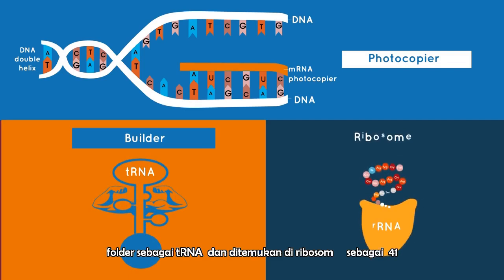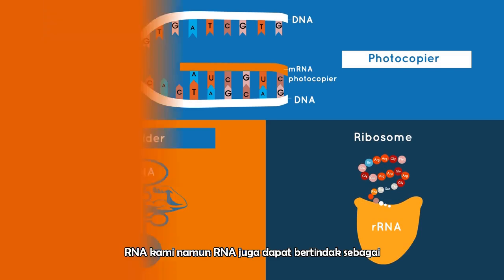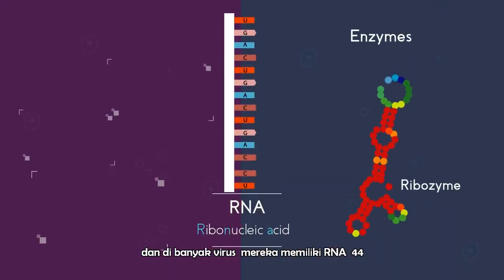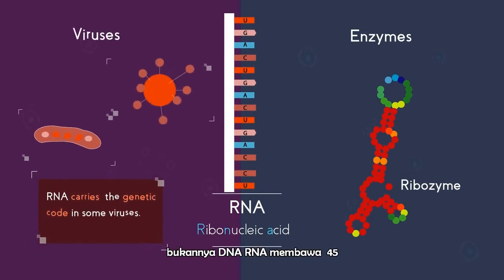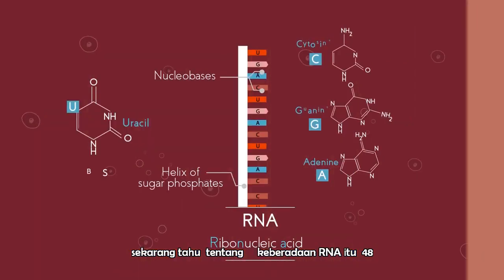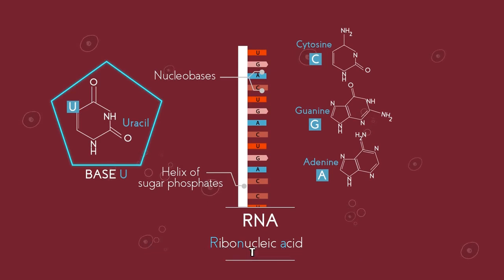For many years we thought RNA was just a DNA photocopier as mRNA, a protein builder as tRNA, and found in ribosomes as rRNA. However, RNA can also act as enzymes to speed up chemical reactions. In many viruses, RNA is used instead of DNA — the RNA carries the genetic code in those viruses. To summarize: RNA is a single-stranded nucleic acid that has the base uracil instead of thymine.